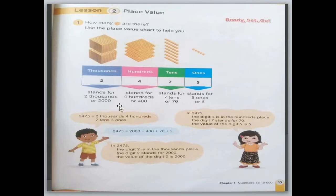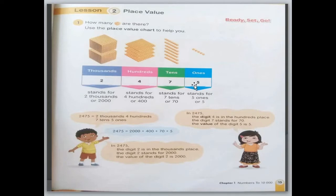Next, 4 is on the hundreds place value, but the value of 4 is 400. Next, 2 is on the place of thousands, so the value of 2 is 2000, because we have this digit on each place value. So the number is 2475.